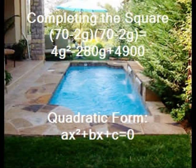They will then subtract 2,450 from both sides of the equation, so the equation will then be 4g² - 280g + 2,450 = 0.